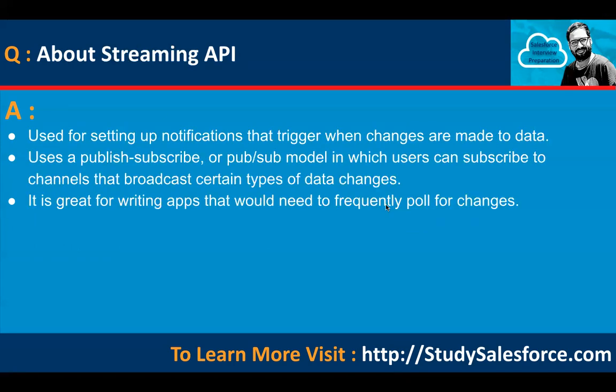Next is Streaming API. It is used for setting up notifications that trigger when changes are made to data. It uses a publish-subscriber (pub/sub) model in which users can subscribe to channels that broadcast certain types of data changes. It is great for writing apps that need to frequently poll for changes.